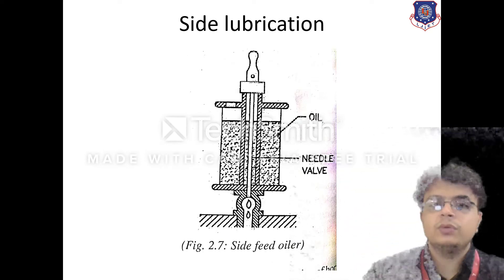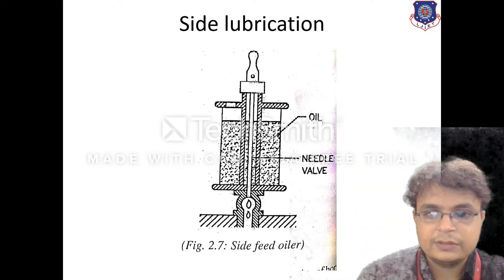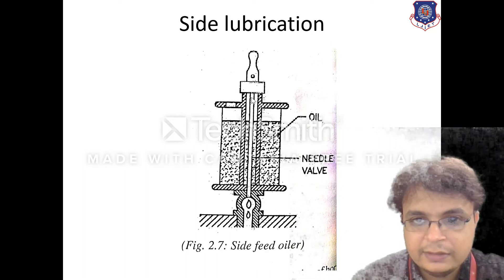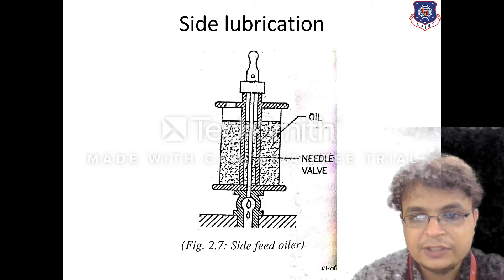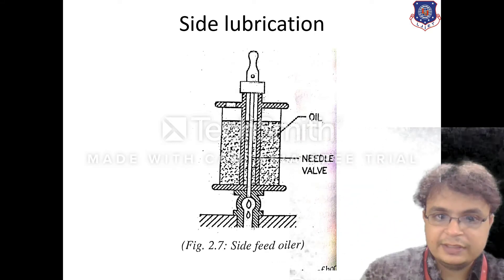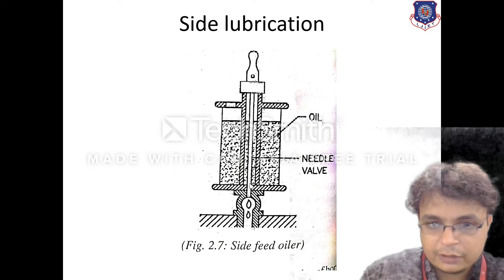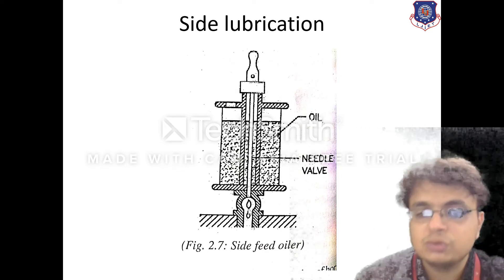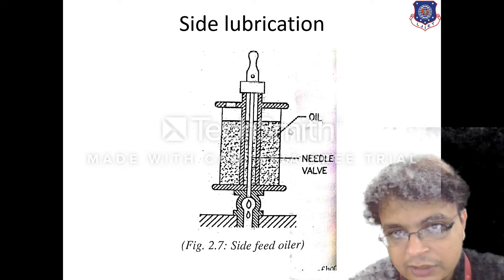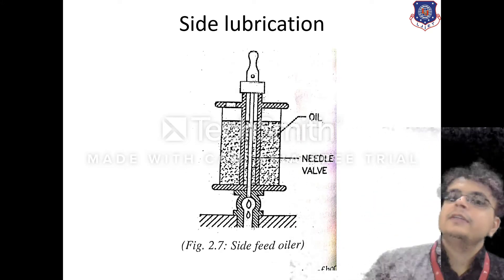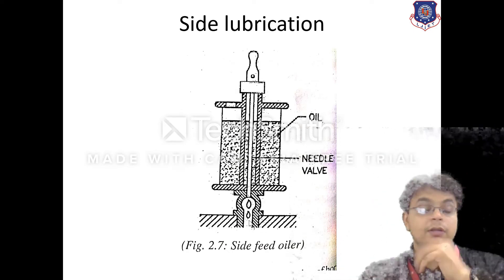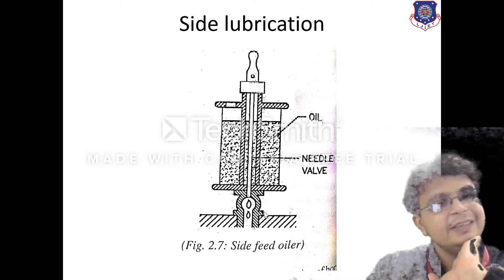In the side lubrication system, oil is present and there is a needle which controls the movement of the oil. When the needle is lifted, droplets come up and reach the desired location. The side glass allows inspection of the oil coming out. This is how the side lubrication system is used.